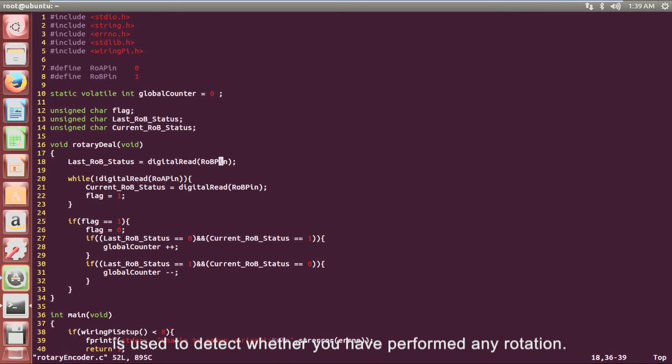The while statement is used to detect whether you have performed any rotation. If it's true, if it rotates clockwise, then the global counter adds 1. If it's anti-clockwise, it subtracts 1, else we do not count.